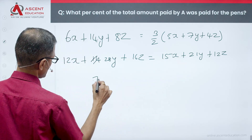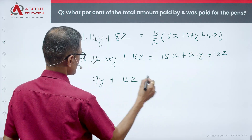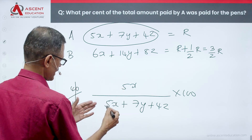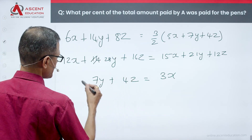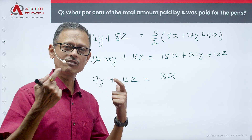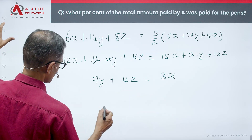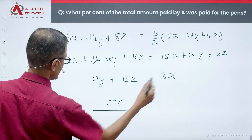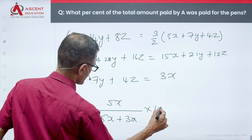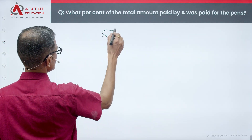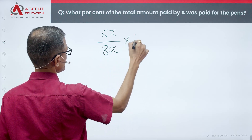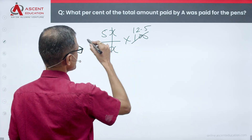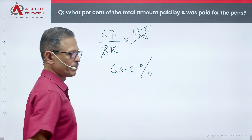Simplifying: 28y minus 21y = 7y, and 16z minus 12z = 4z. This gives us 7y + 4z = 3x. Now, A's total = 5x + 7y + 4z = 5x + 3x = 8x. So the percentage for pens = 5x / 8x × 100 = 5/8 × 100 = 62.5%.